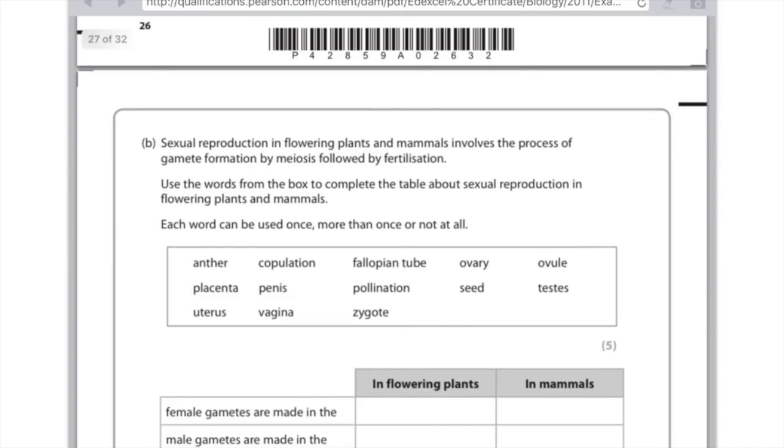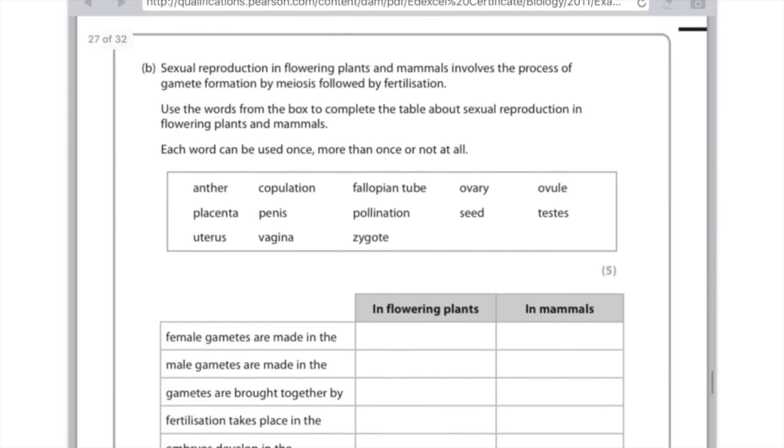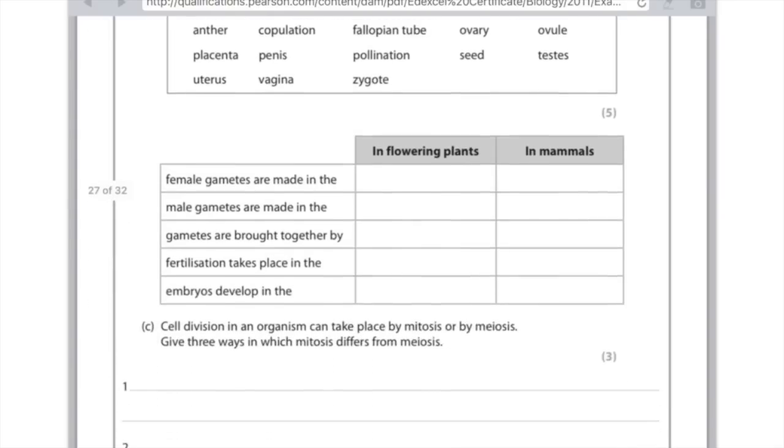Anyway, moving on to something more relevant. Sexual reproduction in flowering plants and mammals involves the process of gamete formation by meiosis, followed by fertilisation. Use the words from the box to complete the table about sexual reproduction in flowering plants and mammals. Each word can be used once, more than once or not at all. Right, female gametes are made in the ovule in flowering plants and in mammals these are obviously produced in the ovary. Male gametes are made in the anther in the flowering plants, whereas in mammals they're made in the testes. Gametes are brought together by pollination in flowering plants, whereas it's copulation, which is the process of having sex in mammals. Fertilisation takes place in the ovule in flowering plants, whereas in mammals it's inside the fallopian tube, which is also known as the oviduct. And lastly, embryo develops in the seed in flowering plants, whereas in mammals we know that the embryo therefore develops in the uterus, which we also sometimes call the womb.